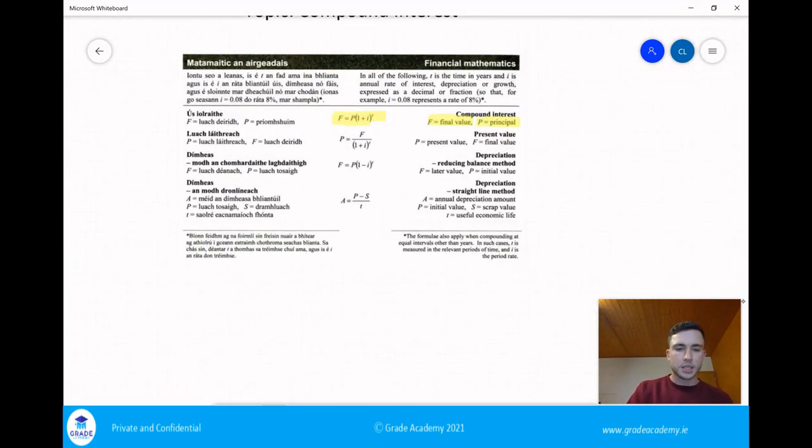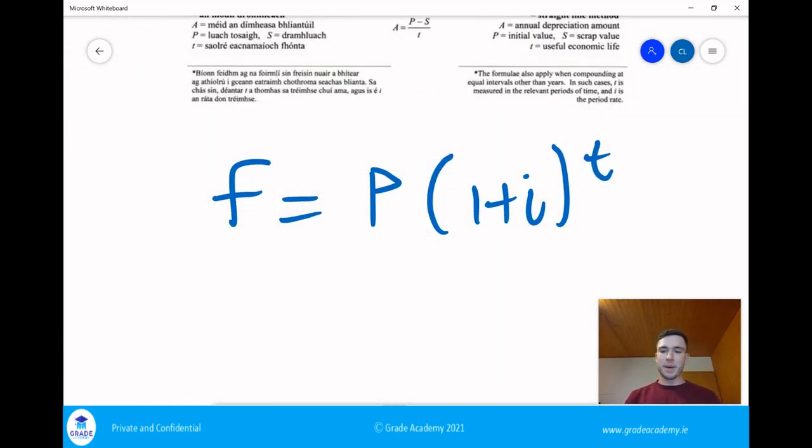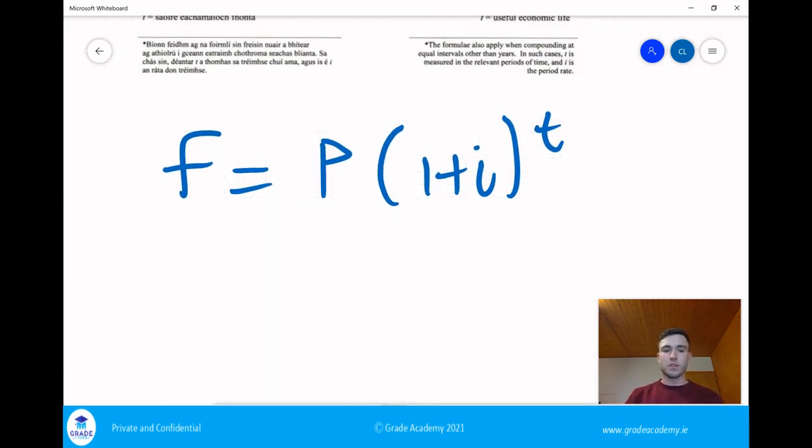So our P, I'll just write down the formula nice and big for us here. This is our compound interest formula. If we are to think about what we've just done.